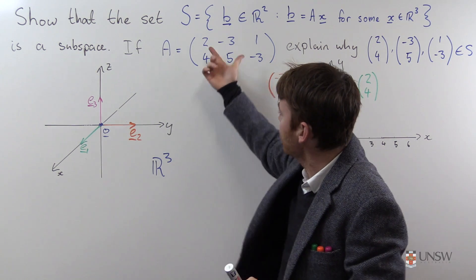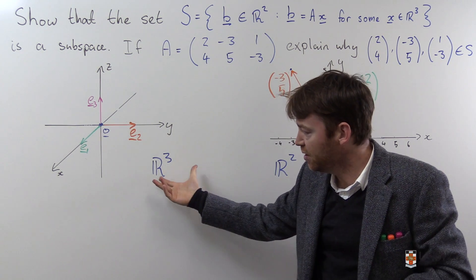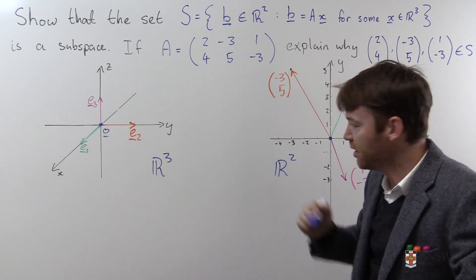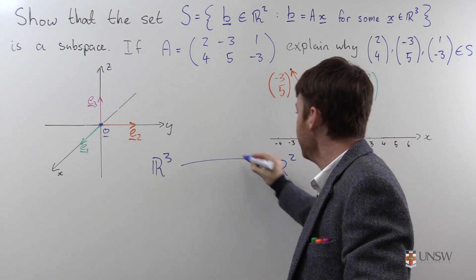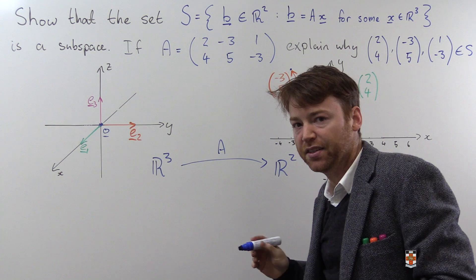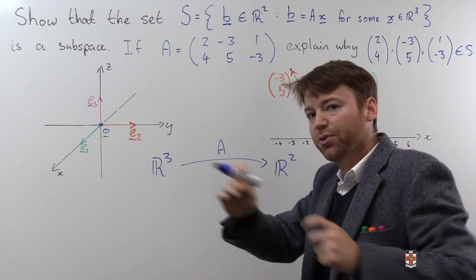The matrix A is a 3 by 2 matrix and it takes elements from R3 and maps them into R2. So it's taking a three-dimensional space and squishing it into a two-dimensional space.